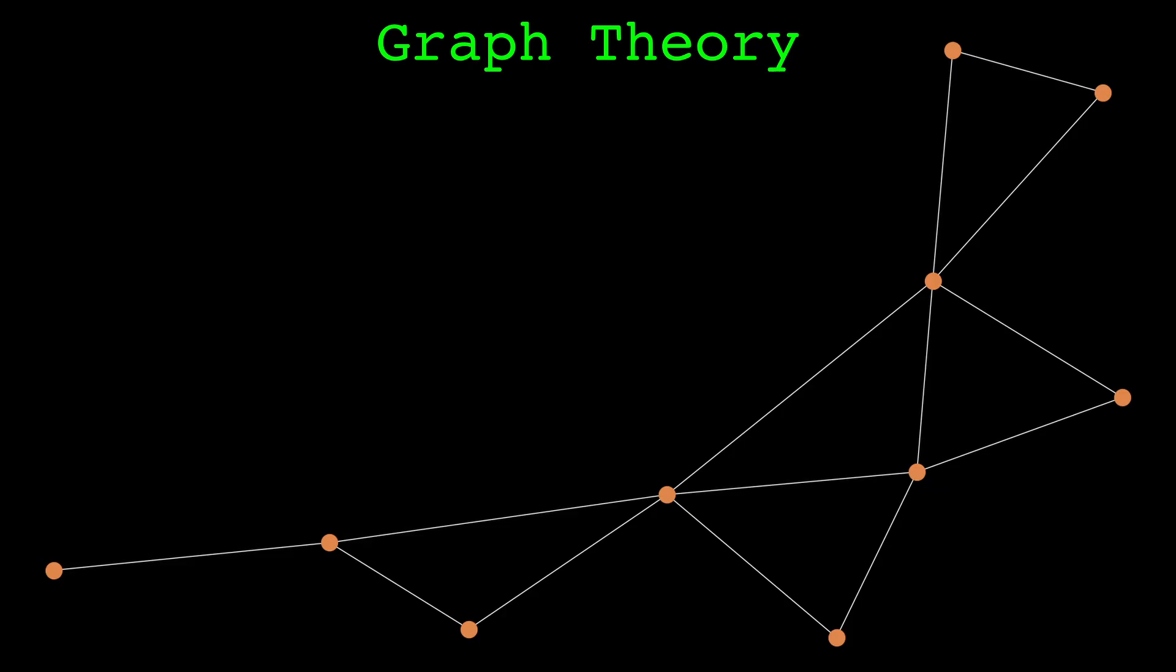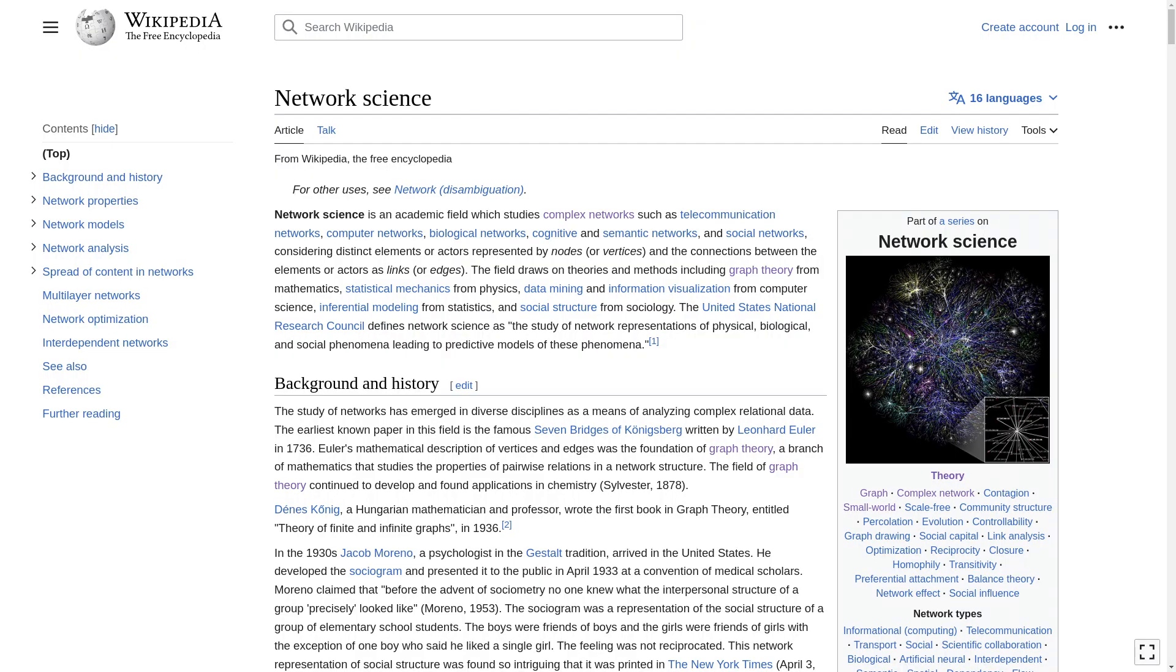A seemingly separate topic is graph or network theory. A graph is a mathematical structure built of nodes and links, where the nodes represent some object and the links represent some kind of relation between them. There are many different metrics and algorithms to analyze graphs. It's a whole field of study.